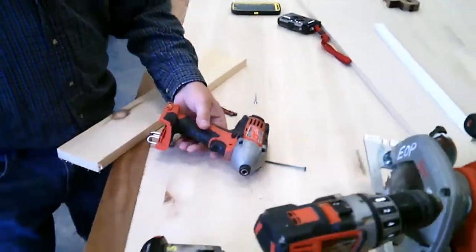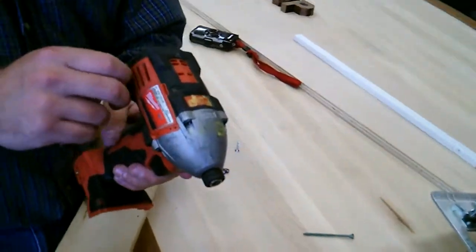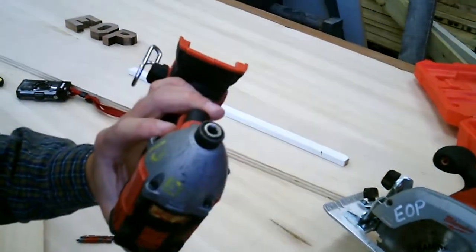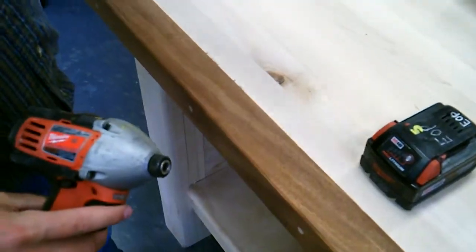Right now we're going to go through the safety of some of the hand tools that we use. This here is a Milwaukee impact driver. It's used for fastening wood together.